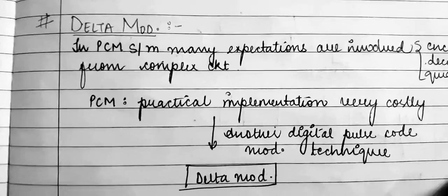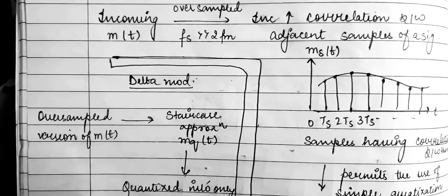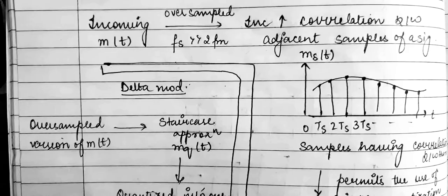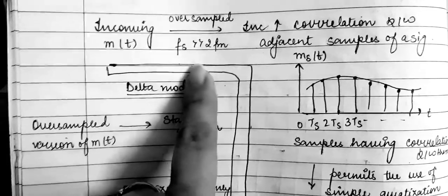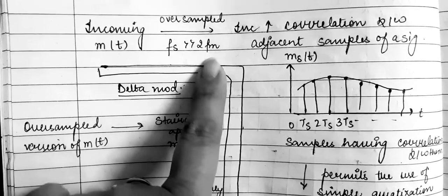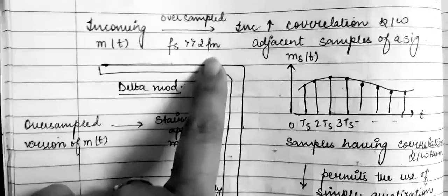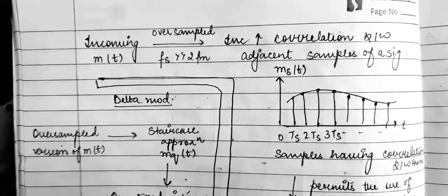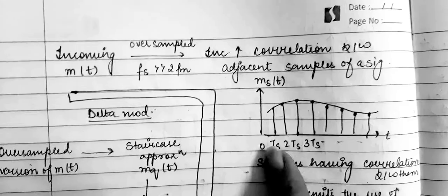That technique is Delta Modulation. In Delta Modulation, we have an incoming signal that is over-sampled. The over-sampling criteria is that fs is greater than or equal to twice of fm. This increase in sampling causes an increase in the correlation between the adjacent samples of a signal.